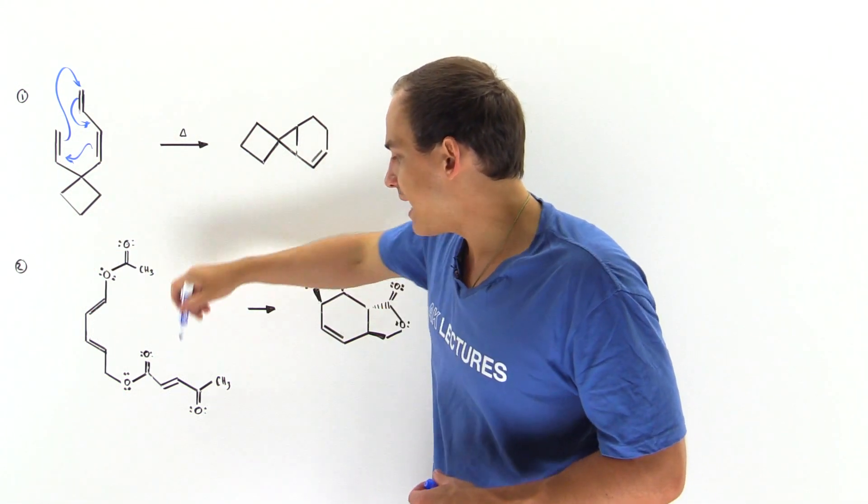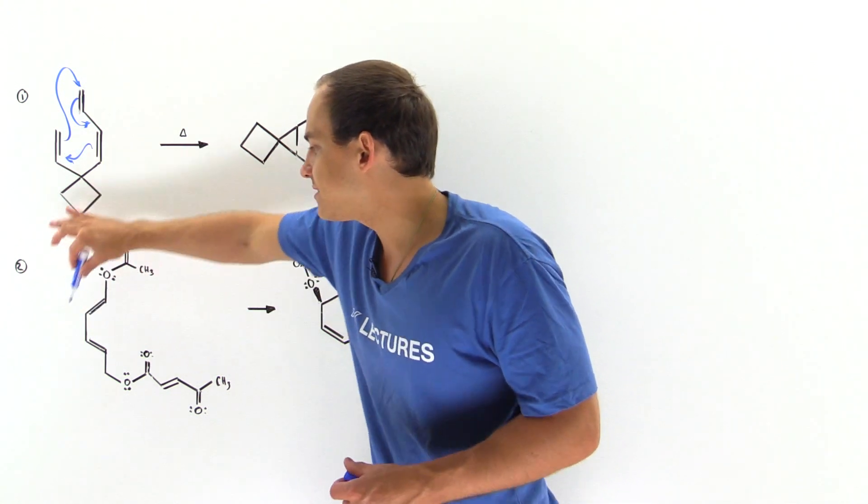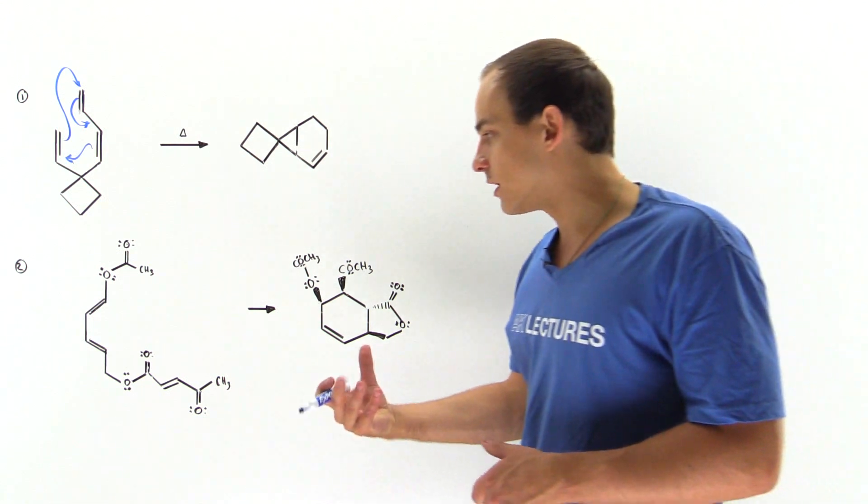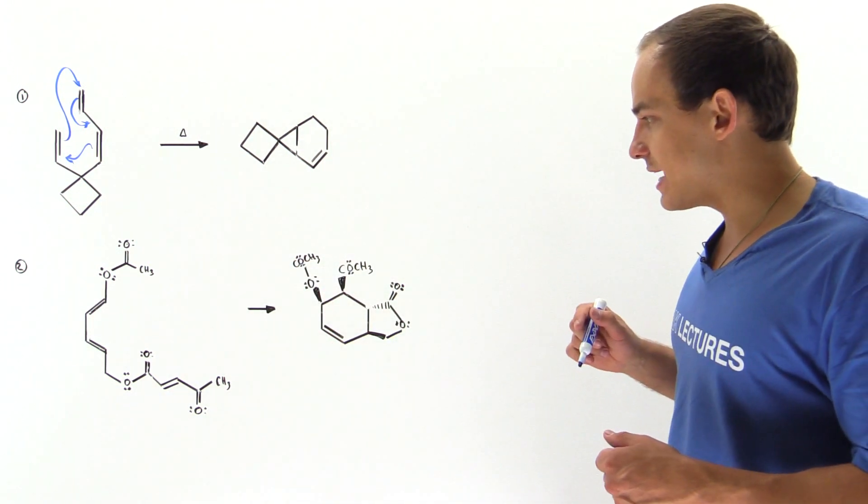We can imagine that this is our dienophile and this is our 1,3-butadiene, and an intramolecular internal Diels-Alder reaction takes place.